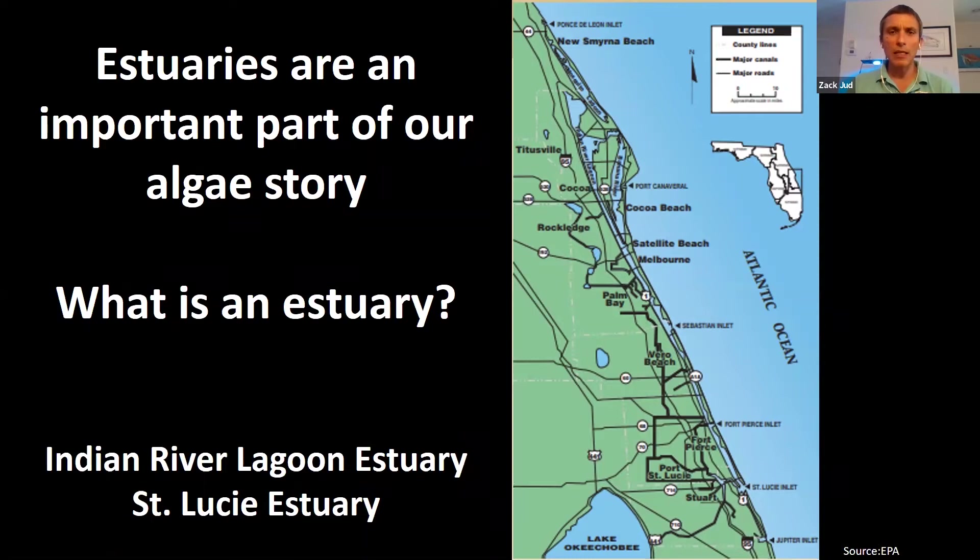Our closest sand ridge runs along the western shoreline of the Indian River Lagoon. The Indian River Lagoon is considered one of the most biodiverse estuaries in all of North America — over 4,300 different species have been identified living there. So it's an incredibly important place, but it's also a place that's under attack right now.